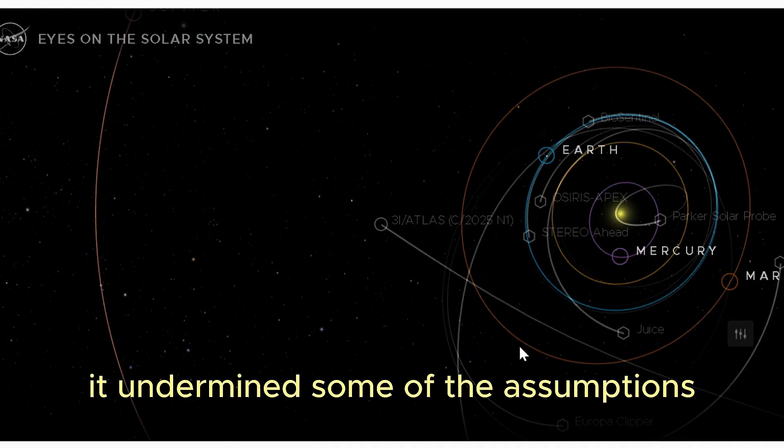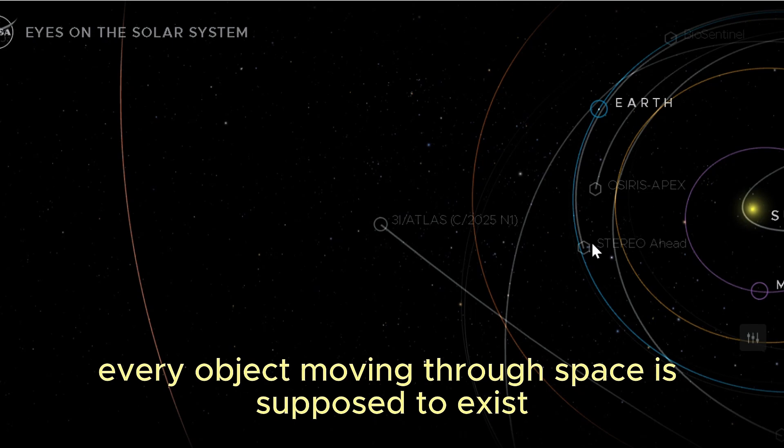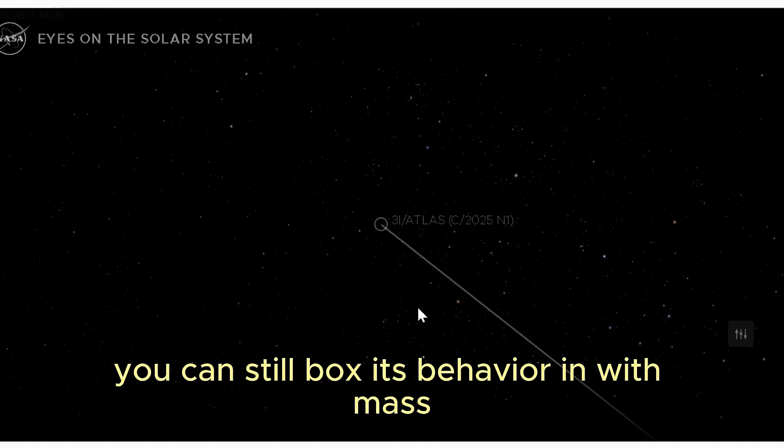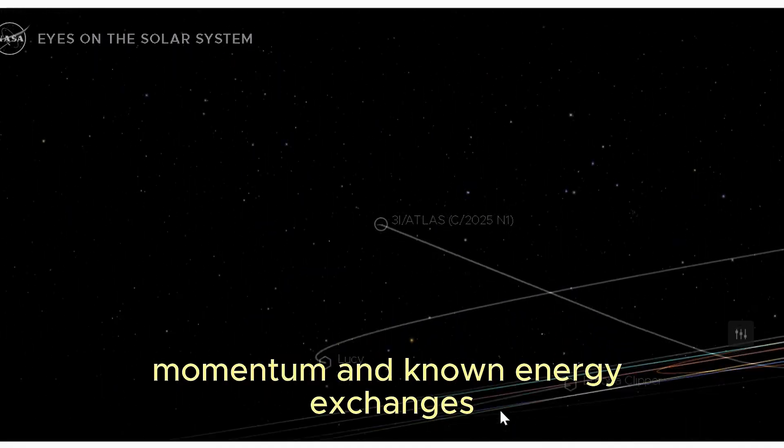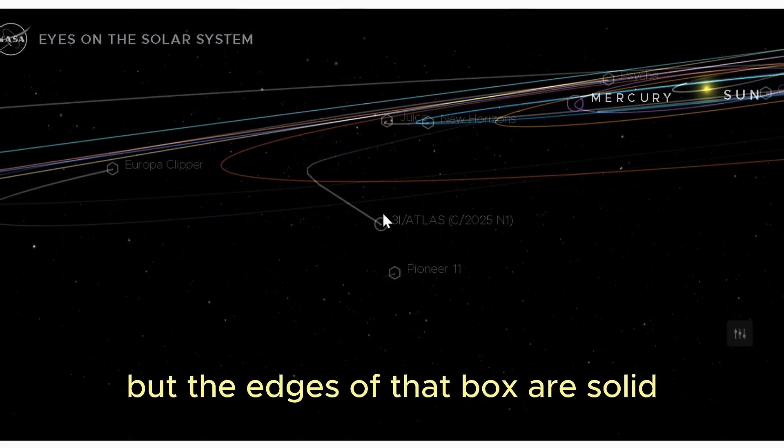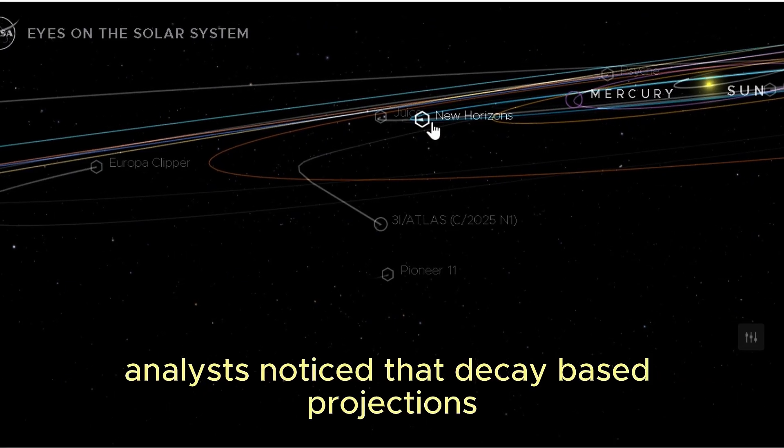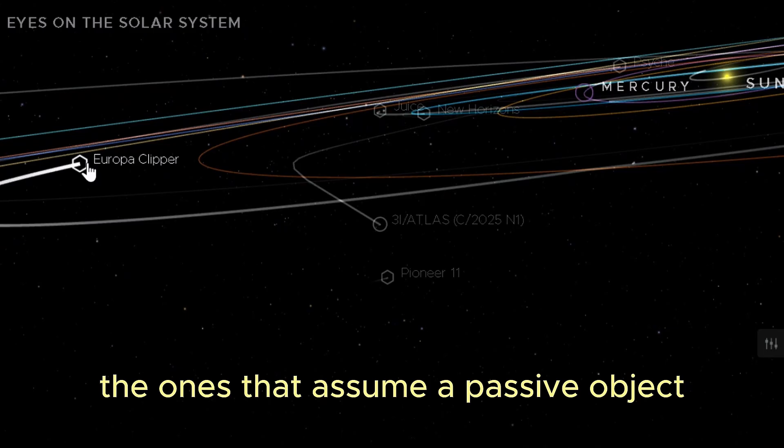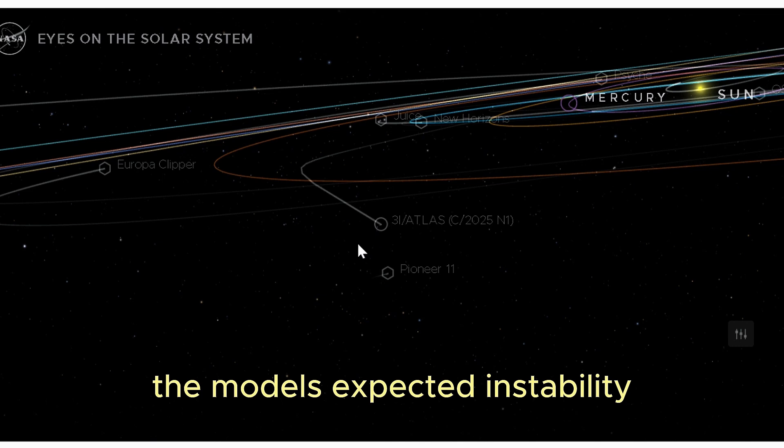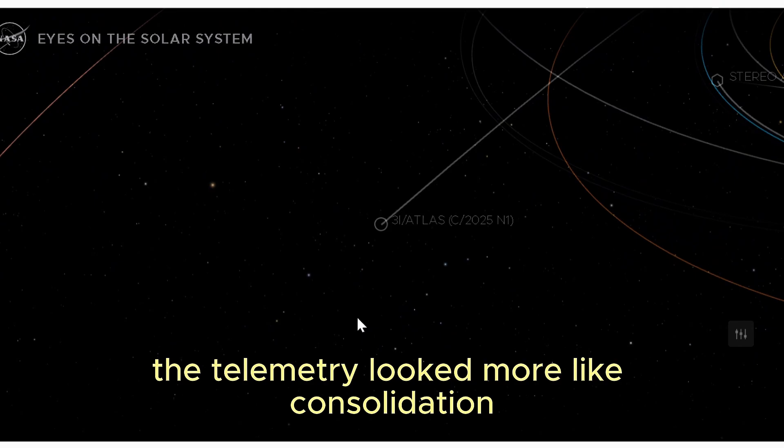Why does that matter? Because every object moving through space is supposed to exist inside certain constraints. Even when you don't know the exact composition, you can still box its behavior in with mass, momentum, and known energy exchanges. The details may be messy, but the edges of that box are solid. The outbound patterns from 3I Atlas pushed against those edges. Analysts noticed that decay-based projections, the ones that assume a passive object losing energy and structure, kept overshooting what the data showed. The models expected instability, progressive fragmentation, growing entropy. Instead, the telemetry looked more like consolidation.